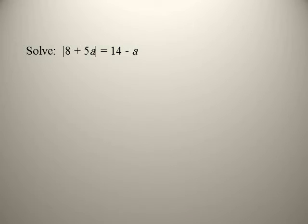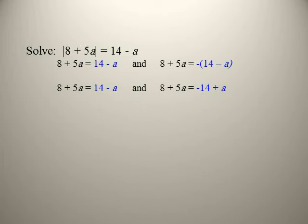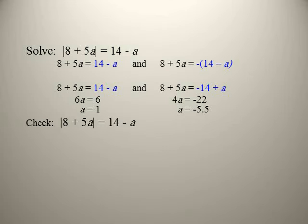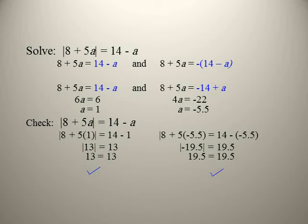Solve |8 + 5a| = 14 − a. Inside the absolute may be positive or negative, so 8 + 5a = 14 − a or 8 + 5a = −(14 − a). First: 6a = 6, so a = 1. Second: 8 + 5a = −14 + a, giving 4a = −22, so a = −5.5. Check both values to confirm. The solution set is {1, −5.5}.